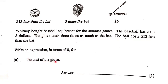The glove costs three times as much as the bat. The bat costs B dollars, so the cost of the glove is going to be three times B. Three times B is simply 3B, and so the cost of the glove is 3B.